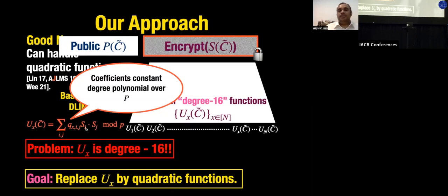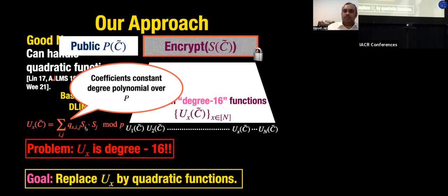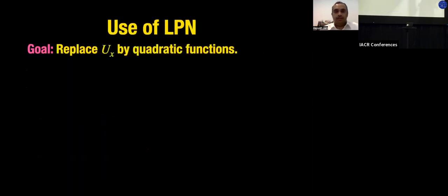These schemes go by the name of partially-hiding functional encryption, built specifically in the line of work on IO. For the rest of the talk, we'll ignore the public component and just focus on degree reduction — the public component is implicit.